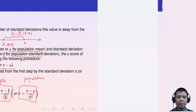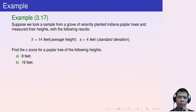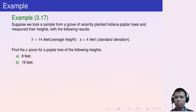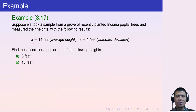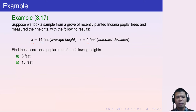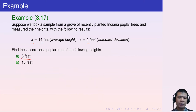Now let's consider an example. Suppose we take a sample from a group of recently planted Indiana poplar trees and measure their heights. The sample mean is 14 feet and the sample standard deviation is 4 feet. We want to find the z-score of a poplar tree with a height of 8 feet.